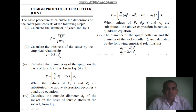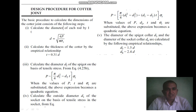The third step is to calculate the diameter D2 of the spigot of the socket on the basis of tensile stress. The equation is: P = (π/4)(D² − D2²) × σt (Equation 4.2). When the values of P, t, and sigma t are substituted, the expression becomes a quadratic equation and you can solve for D2.